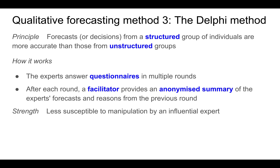To address this shortcoming, there's another method called the Delphi method. The reasoning is that a forecast from a structured group of individuals is more accurate than from an unstructured group, so it benefits from panel consensus with additional structure. The experts do not meet together in a room; instead, they communicate through a facilitator by answering anonymous questionnaires. The facilitator anonymizes and summarizes the information, including the forecast and the reasons for it. After multiple rounds, the group arrives at a final forecast. The strength of the Delphi method is that it is less susceptible to manipulation by an influential expert through this anonymity.